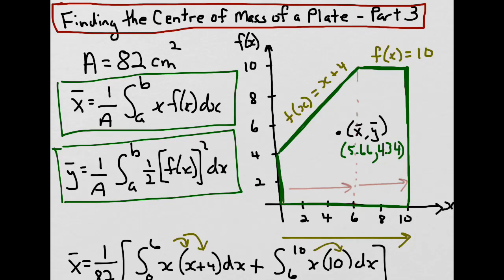So the exact coordinates of the center of mass of our plate are (5.66, 4.34).